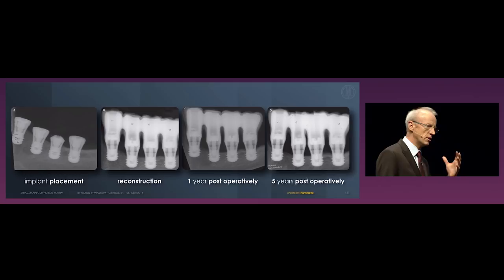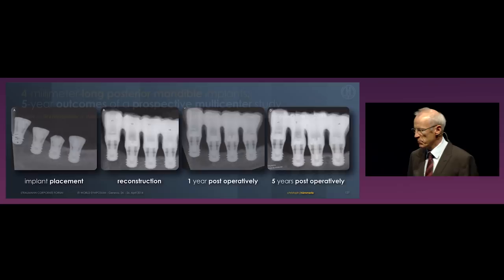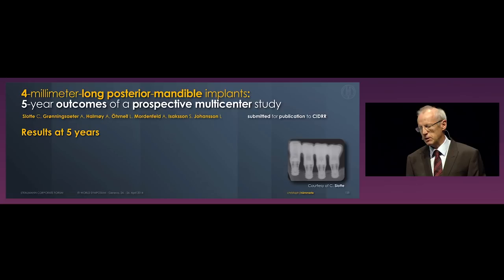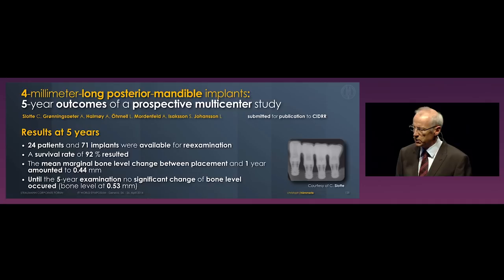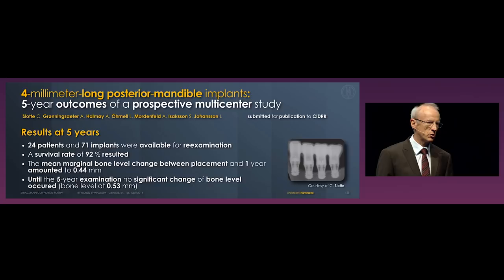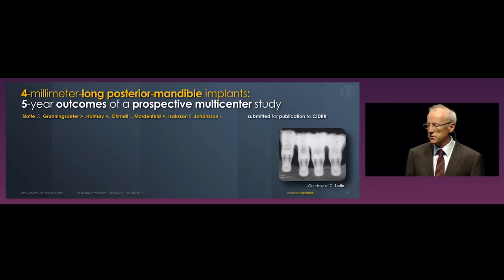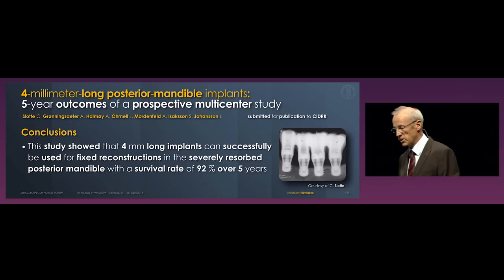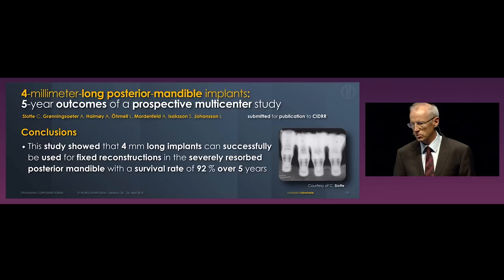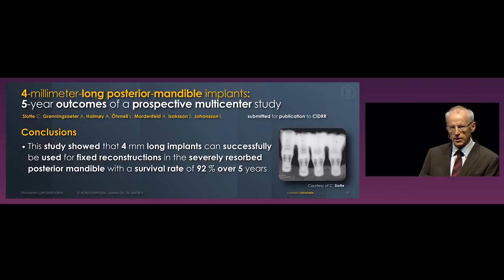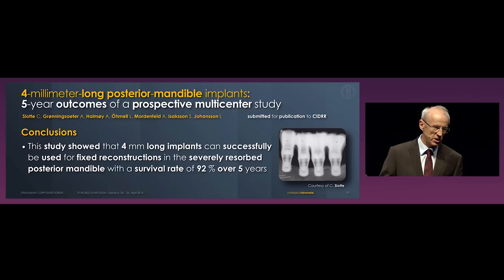At five years, 24 patients were available with 71 implants. Survival rate: 92%. Marginal bone level change from placement to reconstruction was almost half a millimeter, with stability over time — increasing by only one tenth of a millimeter over five years. The study showed that four millimeter long implants can successfully be used for fixed reconstructions in severely resorbed posterior mandible with a survival rate of 92% over five years. Now, you might say you've seen studies showing 99% survival — but in those studies, not a single patient had a situation like this. These patients are all excluded. Their only options were something removable, augmentation, or referral. Now we have options to treat these patients ourselves.